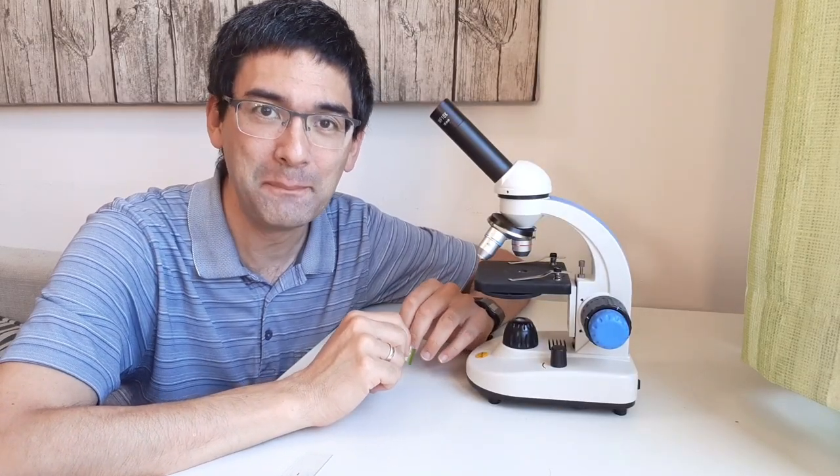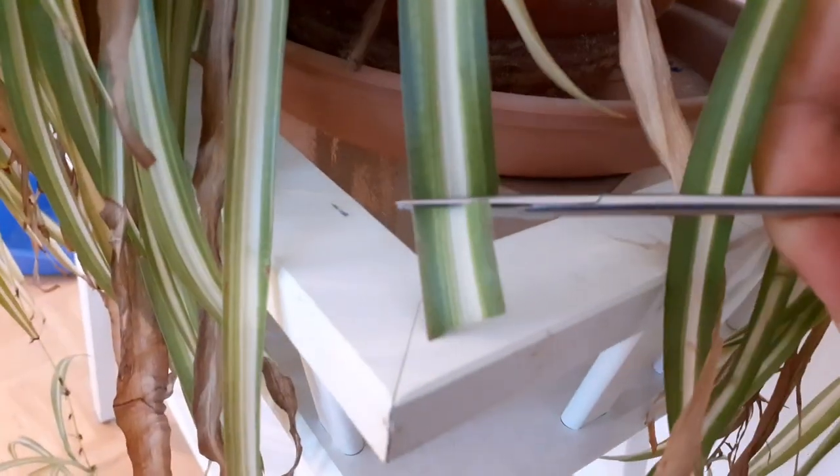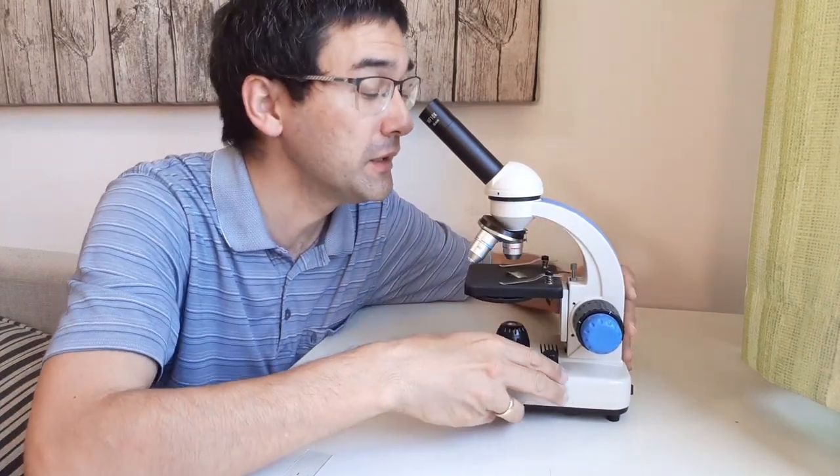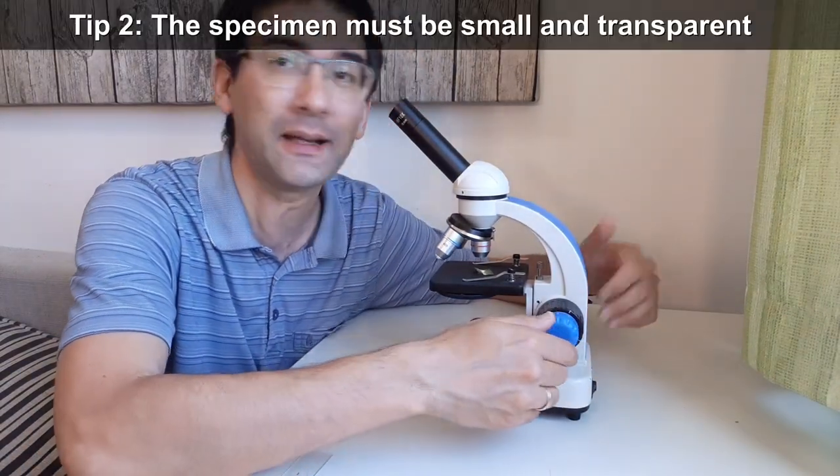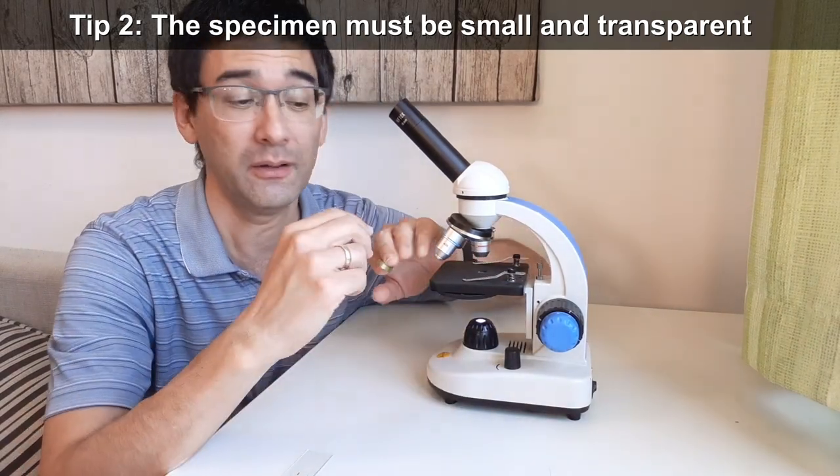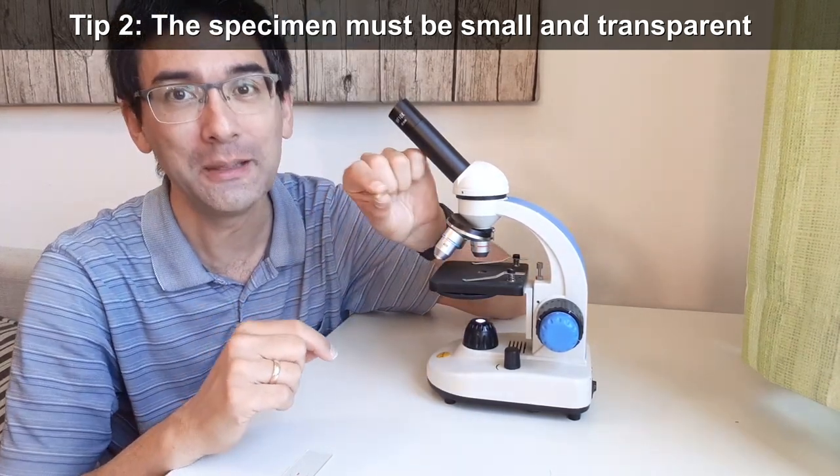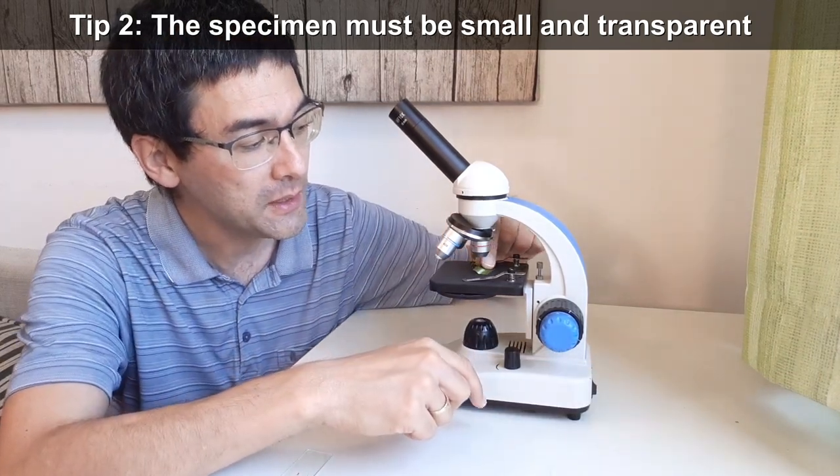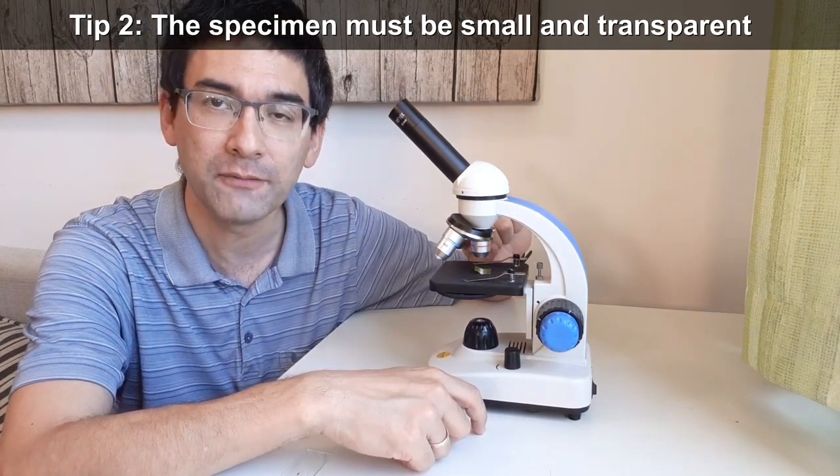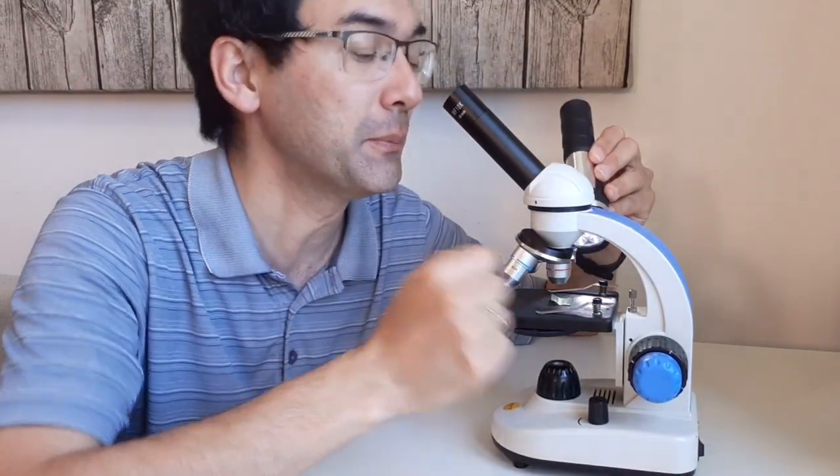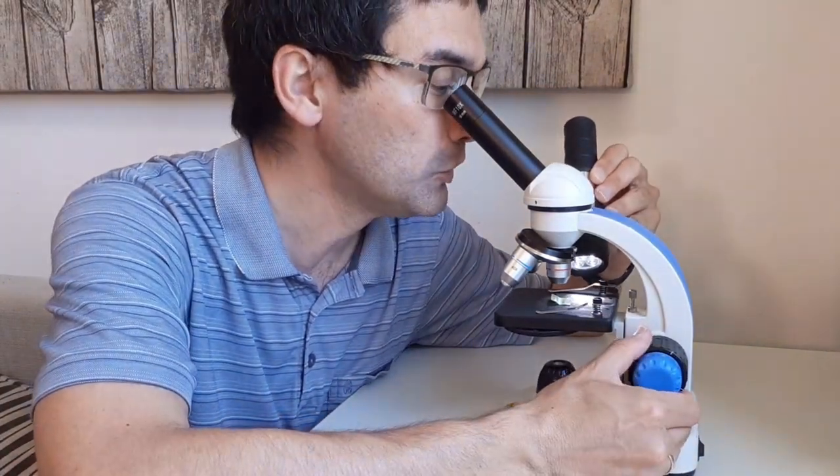Second problem is sometimes people put on here a specimen that is way too thick. For example, if you want to look at a leaf of a plant, then sometimes they will take the leaf and simply put it directly on the stage here. And then they're surprised that they don't see anything at all. And it's all black and it's all dark. So what's going on? Well, those leaves here, they might appear to be quite thin to you, but actually they are several cell layers thick.